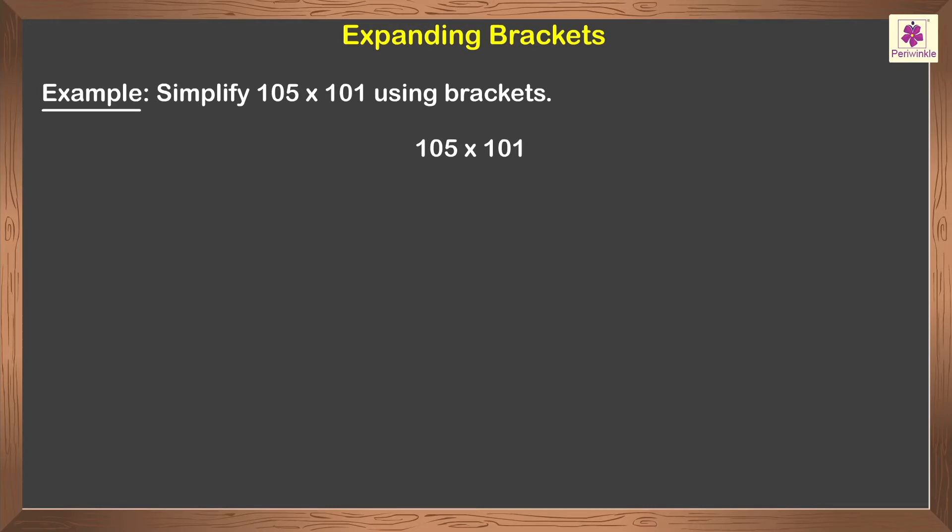As 100 is the nearest common number, we split the numbers to (100 plus 5) and (100 plus 1). Now we will multiply each of the numbers in the first bracket with the second bracket.